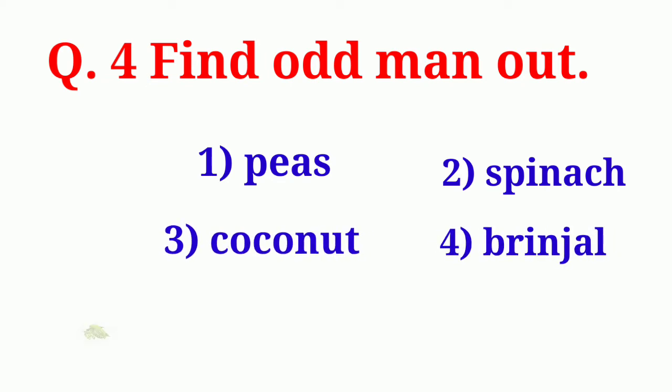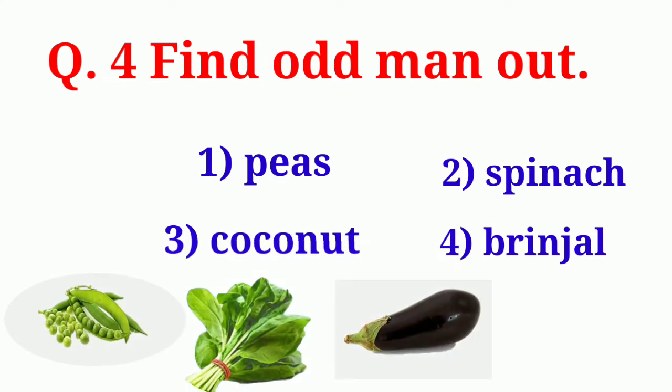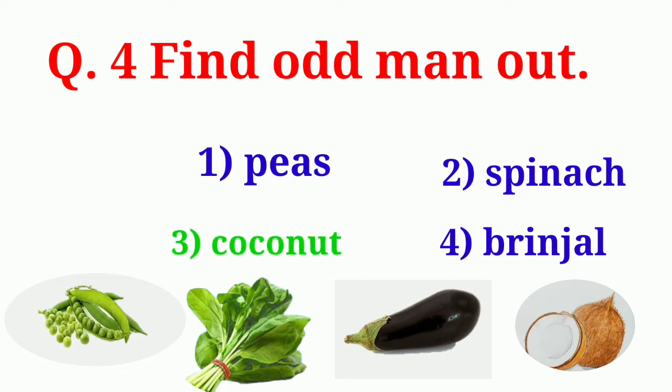See, here, Peas, Spinach and Brinjal, these are the vegetables. Only Coconut is fruit. So, the odd man is Coconut.